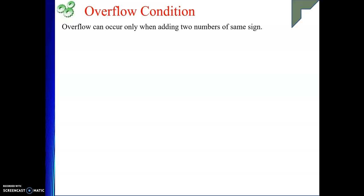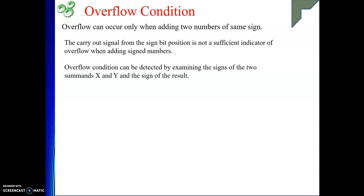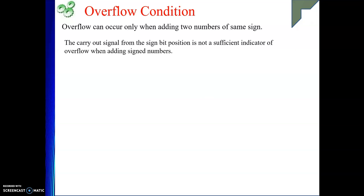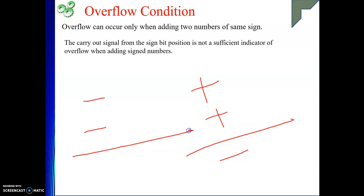The overflow situation occurs when we are adding two numbers of the same sign. We can conclude there is an overflow when we are adding two positive numbers and getting a negative result, or adding two negative numbers and getting a positive result. Whenever the sign of the resultant is not matching with the sign of both inputs, it is an overflow indication.